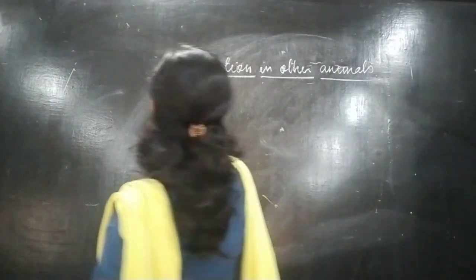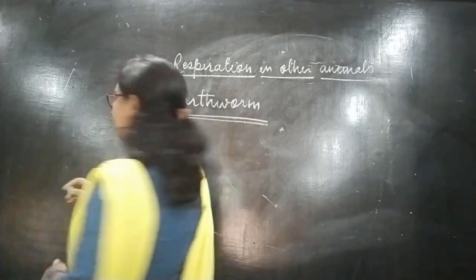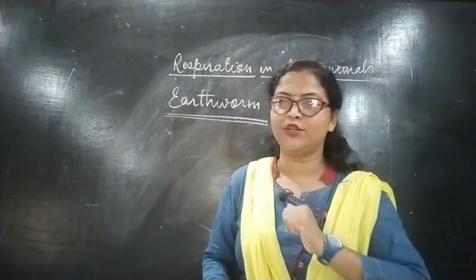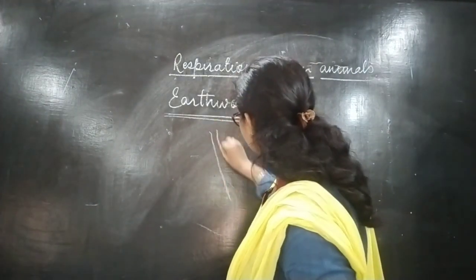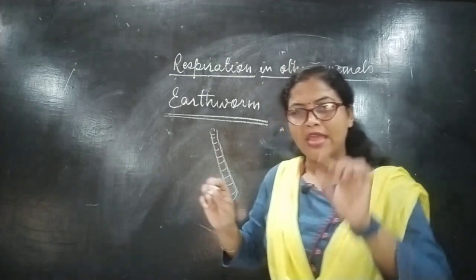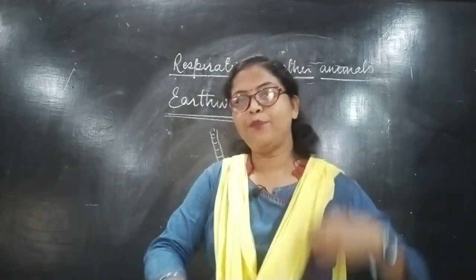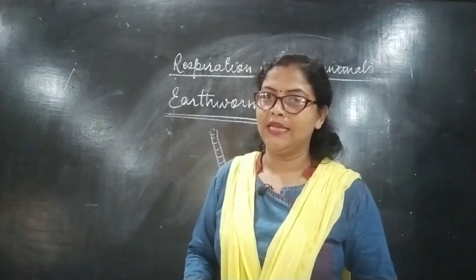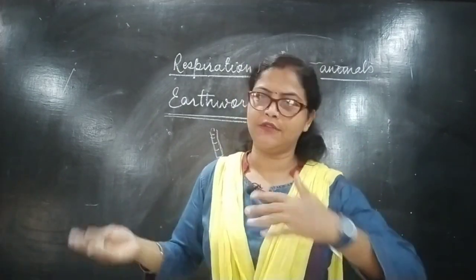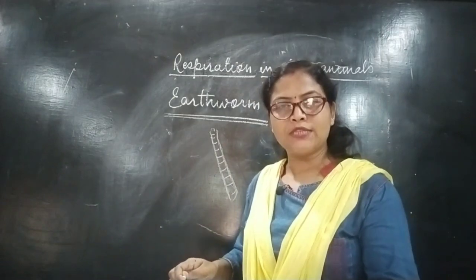The first animal discussed is the earthworm. You must have seen earthworms, which are mostly found in the rainy season coming out from the soil. They have a red-colored, segmented body. Earthworms have moist skin, and through this moist skin they take oxygen from the atmosphere by the process of diffusion and deliver it directly to the cells of their body. Frogs also have moist skin and go through the same process of respiration.